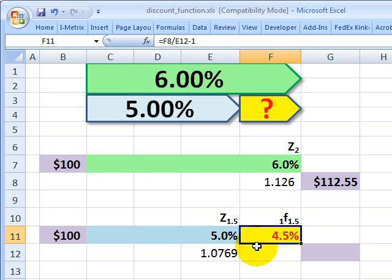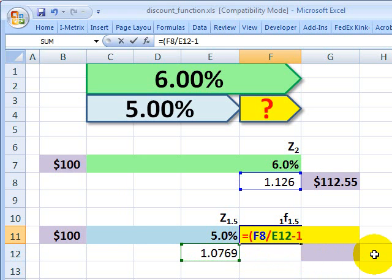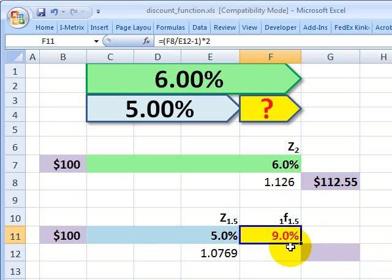That's a six-month rate, though, because I've been using semi-annual periods. So the final thing I need to do here is just multiply this by 2. That gives me the number, that's the 9%, that represents the market-implied forward rate.